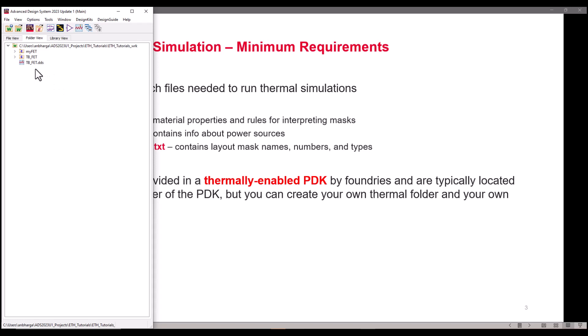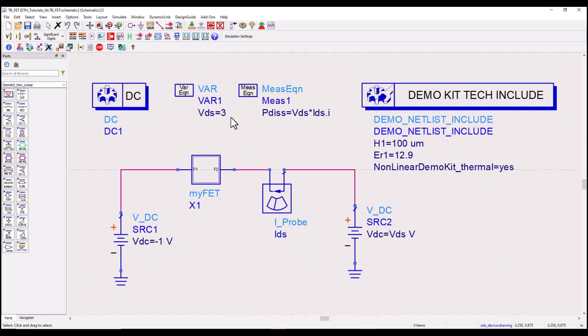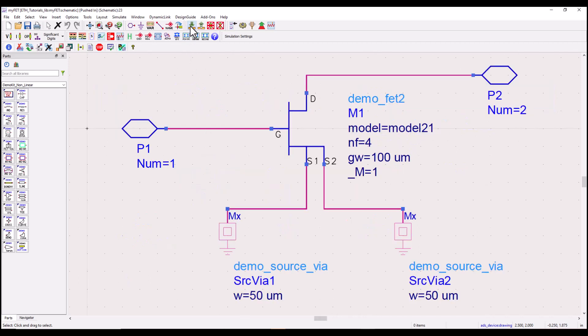Here in my current workspace I have one test bench. So let me start with a test bench where I have a DC simulation being performed in a sub circuit called MyFET. If I push down inside this sub network you can see a FET device with couple of vias and couple of pins.